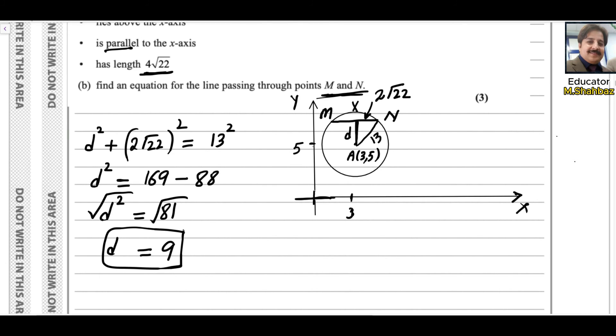To find the equation of this line MN, we can say if you produce it backward, it is passing through which point. We can say it is 5 already and 9 is there. This length is 9.